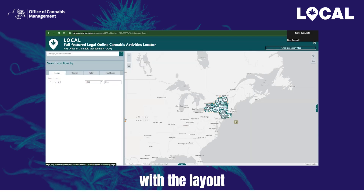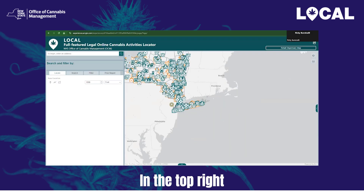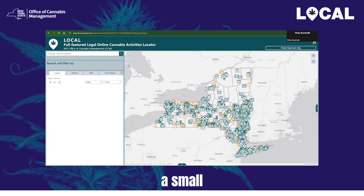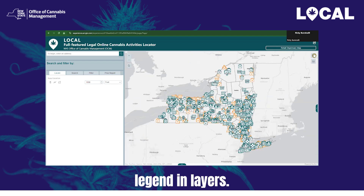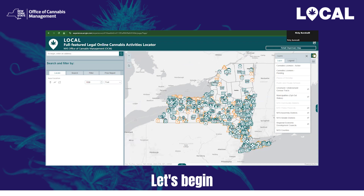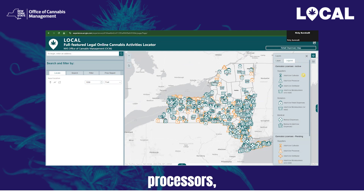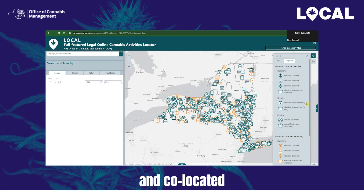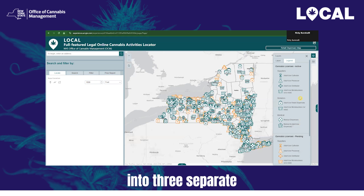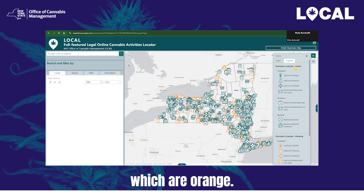Now let's familiarize ourselves with the layout of the application. In the top-right corner of the map window, you will see a small square button that will give you access to the map's legend and layers. Map icons represent the various license and location types in the OCM cannabis ecosystem, including cultivators, processors, distributors, micro-businesses, retailers, medical dispensaries, and co-located medical dispensaries. These icons are categorized into three separate buckets: active, which are green; inactive, which are red; and pending, which are orange.